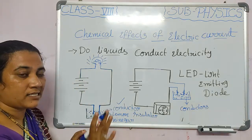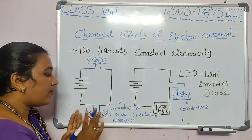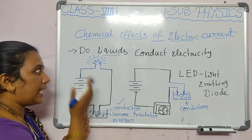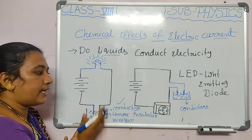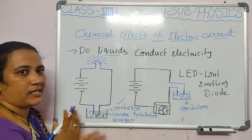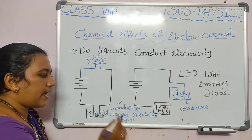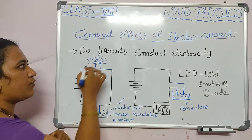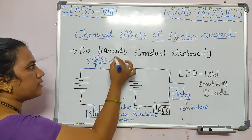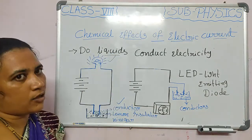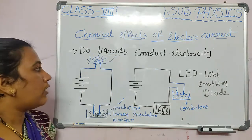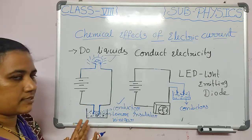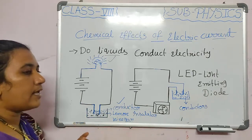Whatever liquid we test — if it is a conductor, the bulb will glow; if an insulator, it will not. Lemon juice and vinegar are conductors, so we can observe the bulb glowing. This is how we test liquids using this simple method.